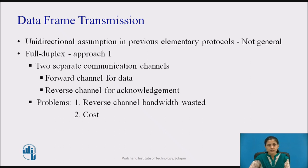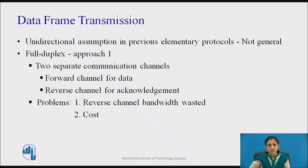In the elementary protocols, data frames were transmitted in one direction only. In most practical situations, there is a need to transmit data in both directions. One way of achieving full-duplex data transmission is to run two instances of one of the elementary protocols, each using a separate link for simplex data traffic in different directions.